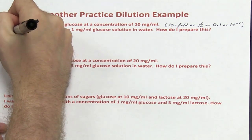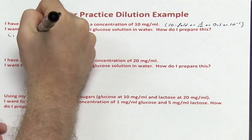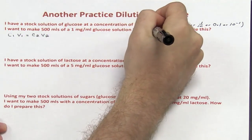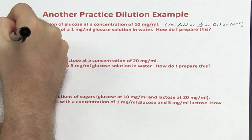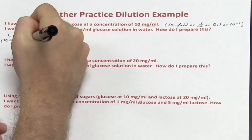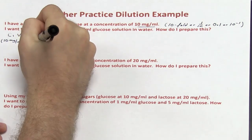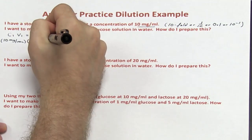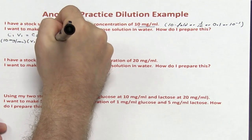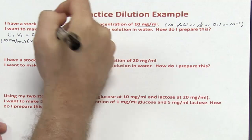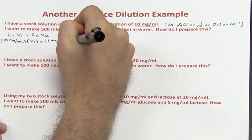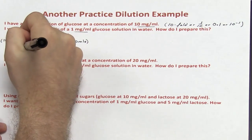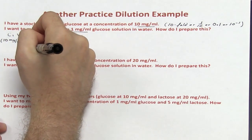Using C1V1 = C2V2: the initial concentration is 10 mg per mL. I don't know how much I need, so that's V1. The final concentration is 1 mg per mL, times the volume of 500 mL. Solving for V1, I get V1 equals 50 mL.